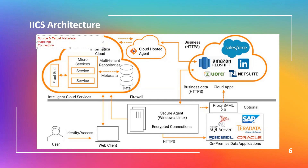The repository also stores connection information for the source and target systems. However, this connection information is stored in an encrypted format. When you configure tasks to run automatically using various scheduling options, the repository stores this scheduling information as well. Additionally, the IACS repository stores logging and monitoring information — it stores the results of all the jobs performed in IACS.